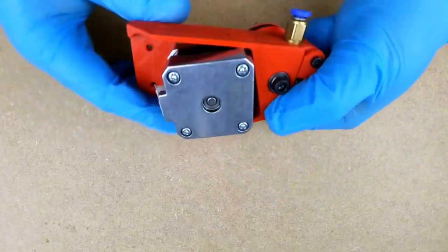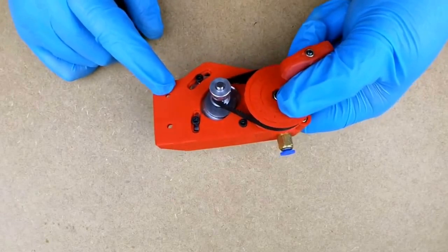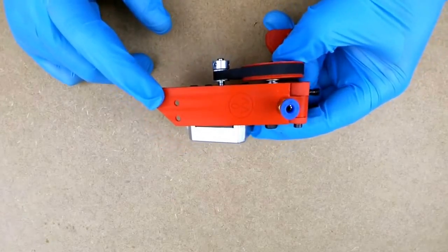There's two mounting modes on two sides to be mounted on a 20-20 profile or on a regular Prusa frame alike.